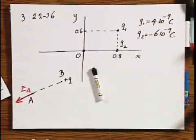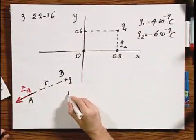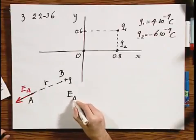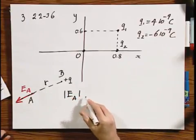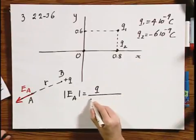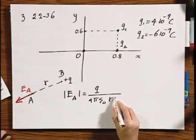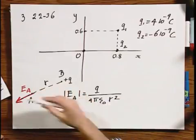So I call it E of A. And if the separation between them is R, then E of A, if I take the magnitude of it now, is the charge at location q divided by 4 pi epsilon 0 R squared. And I already indicated the direction.